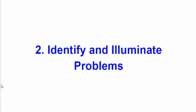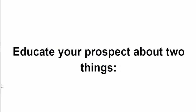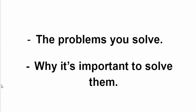Number two is about identifying and illuminating problems. You educate your prospect about two things: the problems you solve and why it's important to solve them. Marketers need to talk about problems people are having, but we also need to become better at informing people about why they need to solve this problem and why they need to take action now — not in a month, not in six months, but now. Sometimes we remind them about cold winds that may be coming down the pipeline.